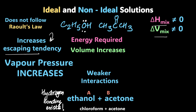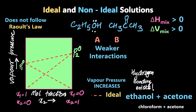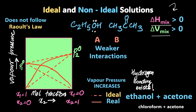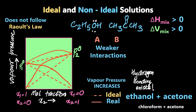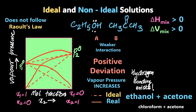Because of the increased escaping tendency, the vapor pressure increases. ΔH mixing > 0 and ΔV mixing > 0. The vapor pressure at all points is higher than what Raoult's law predicts, leading to an overall increase in vapor pressure. This is known as positive deviation from ideality.